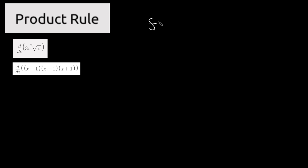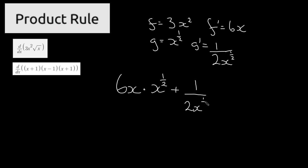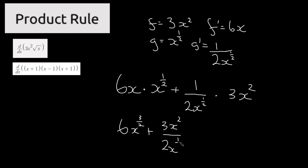For the next one, f is equal to 3x squared, f prime is equal to 6x. Then g is equal to x to the power of 1 over 2, and g prime is equal to 1 over 2 times x to the power of 1 over 2. Now we have our terms and we can apply the product rule: 6x times x to the power of 1 over 2, plus 1 over 2 times x to the power of 1 over 2 times 3x to the power of 2. This simplifies to 6x to the power of 3 over 2.